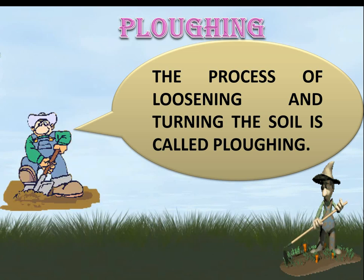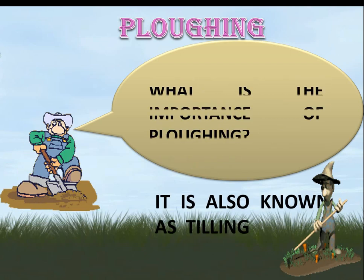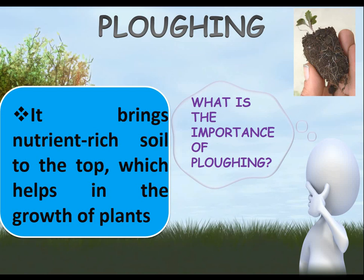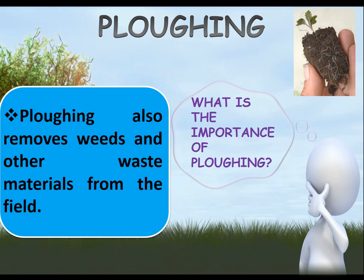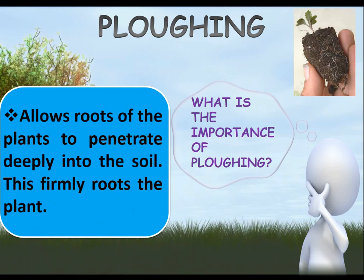Plowing: the process of loosening and turning the soil is called plowing. It is also known as tilling. The importance of plowing: it brings nutrient-rich soil to the top, which helps in the growth of plants. It assists the growth of microbes and worms, which perform decomposing and add nutrients and humus to the soil. Plowing also removes weeds and other waste materials from the field, and allows roots of plants to penetrate deeply into the soil, which firmly roots the plant.